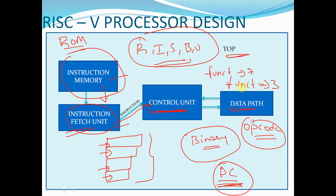The control unit will analyze all these fields — opcode value, function 3 value, function 7 value — and after analyzing, it will determine what type of instruction it is, whether it is an R type, S type, or B type instruction. The instruction fetch unit and instruction memory don't know what type of instruction is being held; only after reaching the control unit will we know what type of instruction we are having.